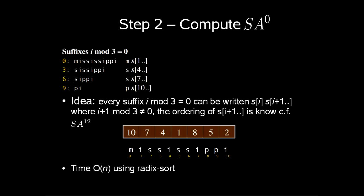For step 2 we compute SA of 0. The rest of the suffixes is i mod 3 equal to 0 being 0, 3, 6 and 9. For every suffix i mod 3 equal to 0 can be written as SI SI plus 1 where i plus 1 mod 3 is different from 0. So the ordering of SI plus 1 is already known from SA1-2.